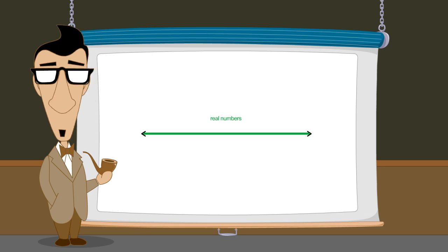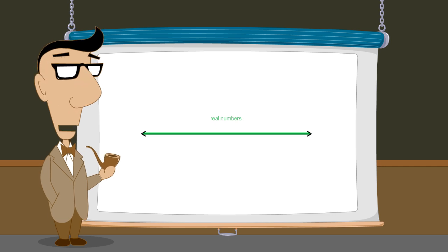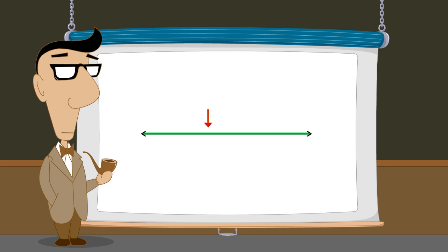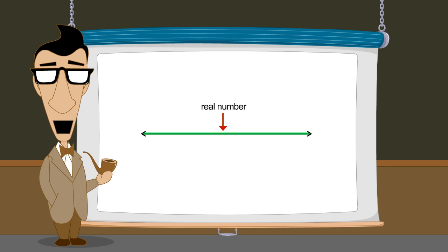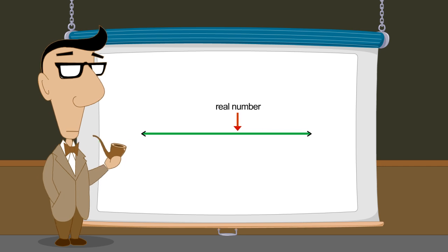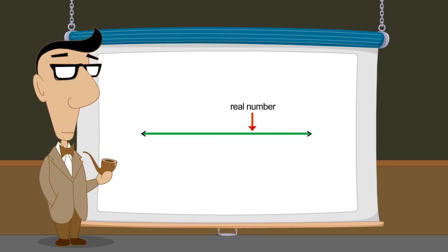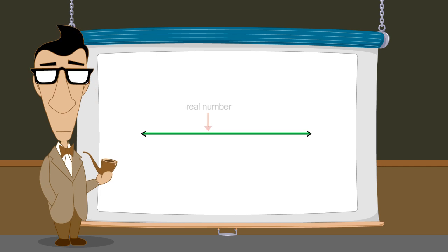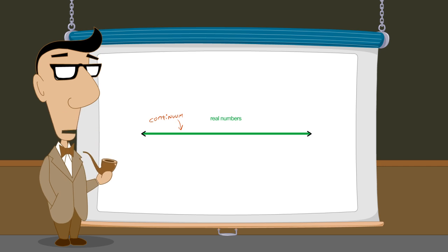Unlike the rational and irrational numbers, every point on the number line corresponds to some real number. If you randomly pick a point on the number line, it will always correspond to a real number. There are no gaps in the real number line. This means that you can move smoothly between any two points and never encounter anything but real numbers. Since there are no gaps, the real numbers form a continuum, a property which is essential for calculus.